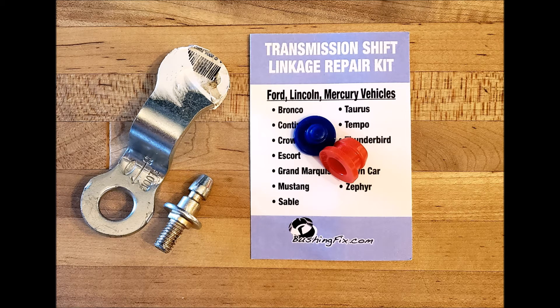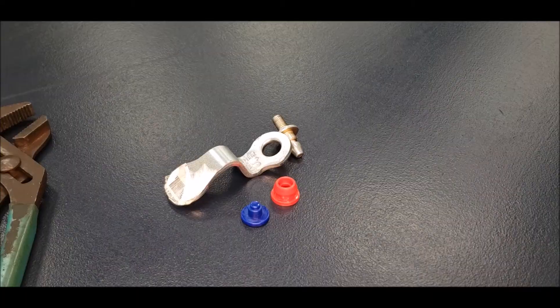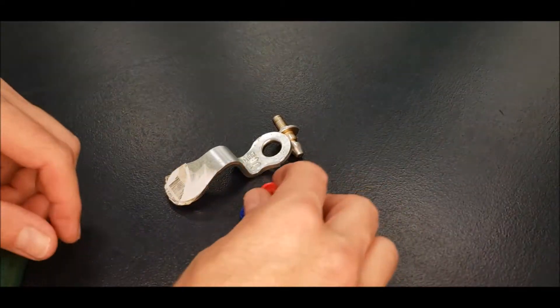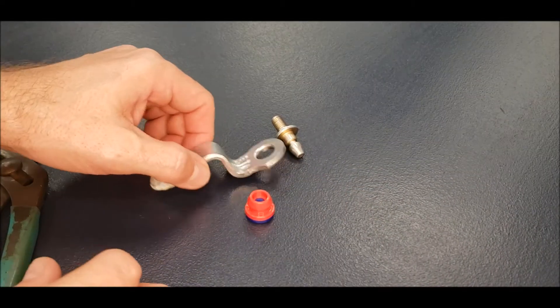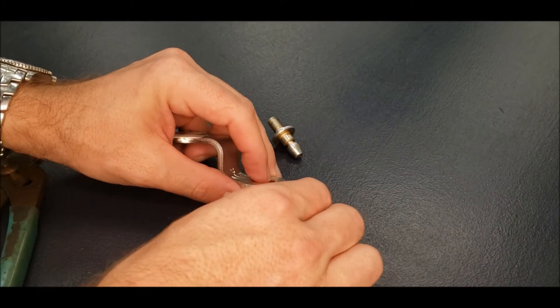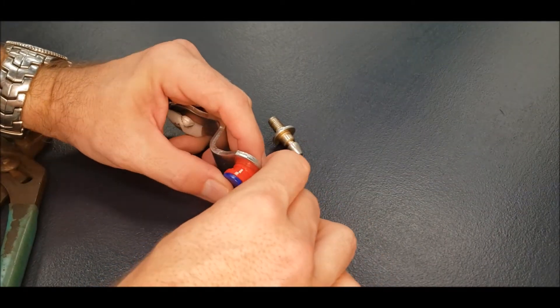In this video we have the shift lever removed from the vehicle, which is easier to do. It only goes back on one of two ways, so just make a note of which way it came off. And we have the shift pin removed also, and you don't need to do that.